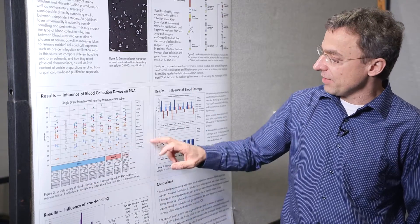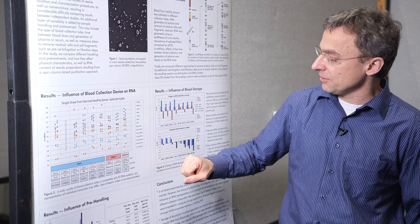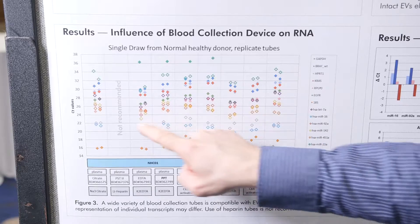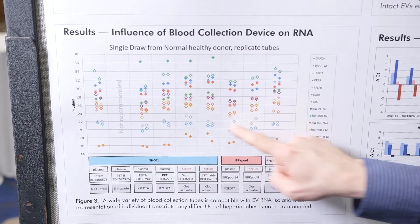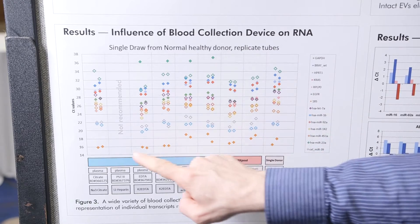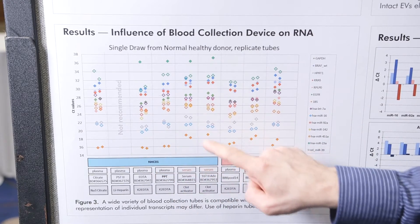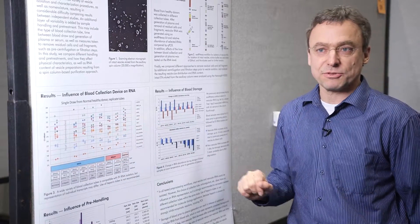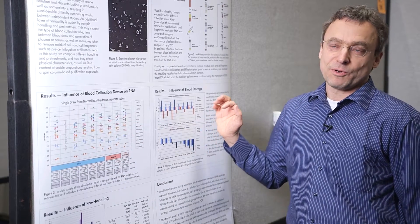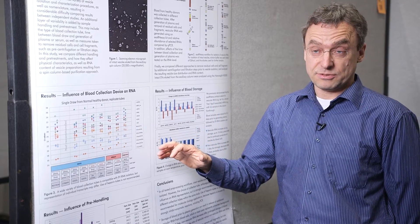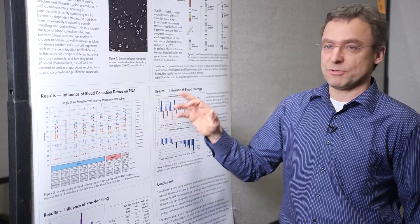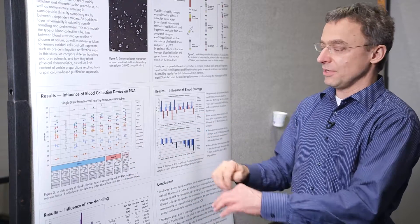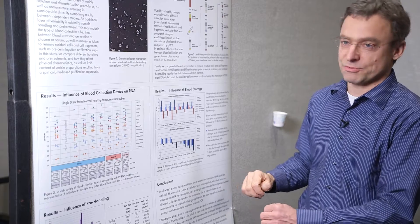We also have an external spike-in control shown as gray diamonds, and you can see it's pretty much the same across all tubes — we get the same extraction and PCR efficiency from all of them. The individual RNA transcripts show a bit more variation depending on which transcript you look at. So the method works with all tube types, but within a study when comparing samples directly, I would stick with just one type of tube to ensure comparability.